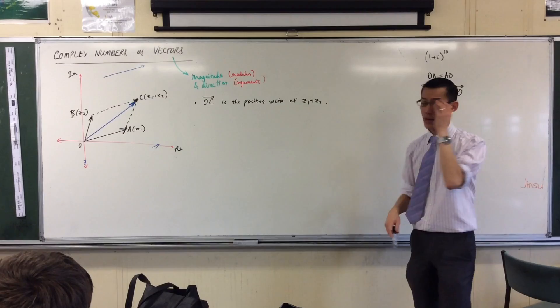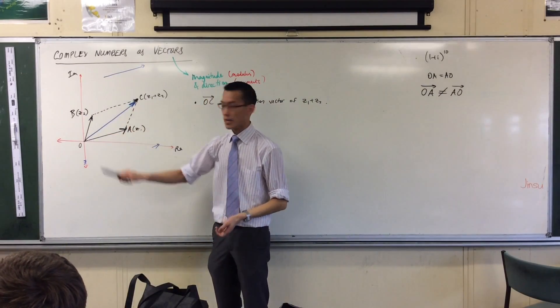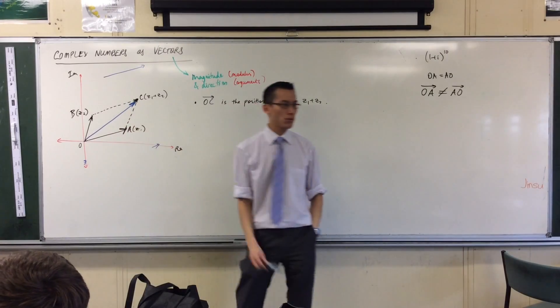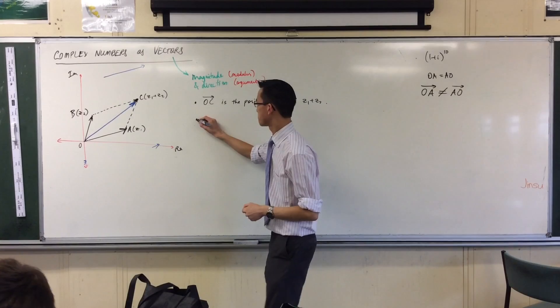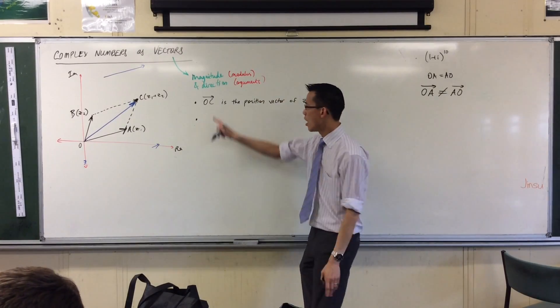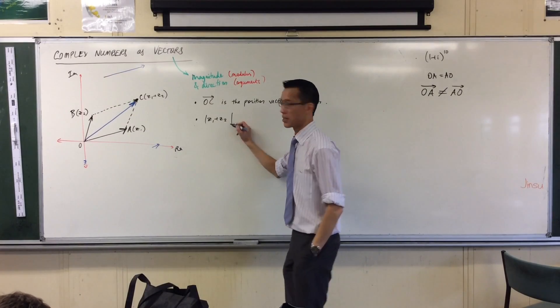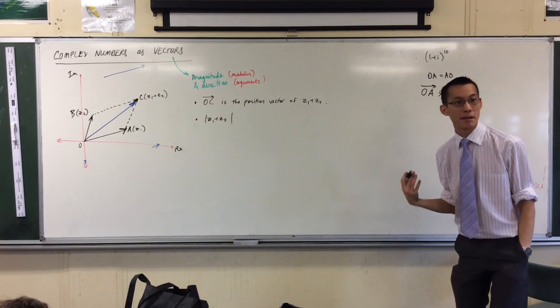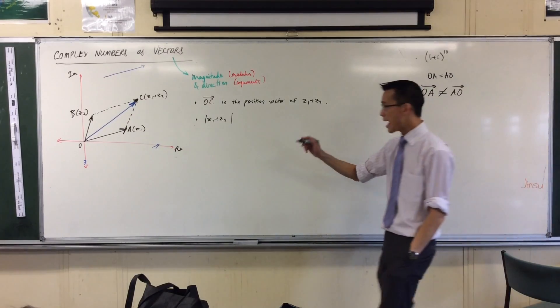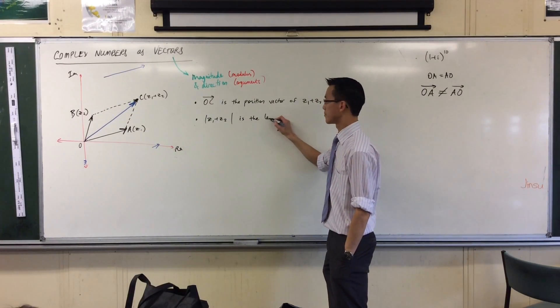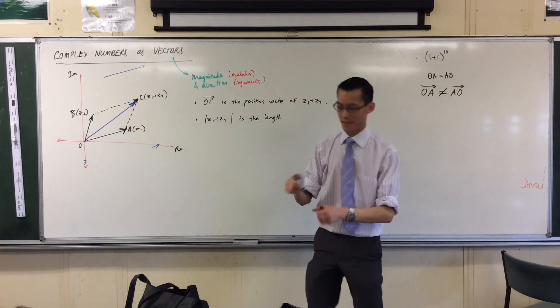In addition to that, remember we said you've got this parallelogram happening here. O, A, C, B. So immediately, what is this blue shape? It's a diagonal of this parallelogram. So I can say, the magnitude of this vector here, and that vector represents Z1 plus Z2, so I can still use my same modulus notation because it's referring to the same numbers, the same values. That is the length of this diagonal of the parallelogram.